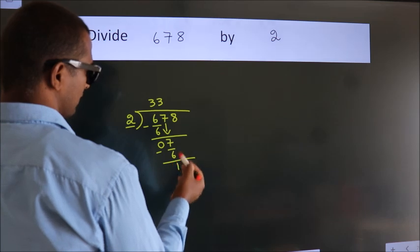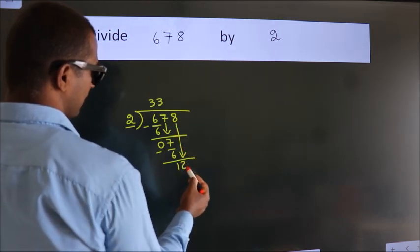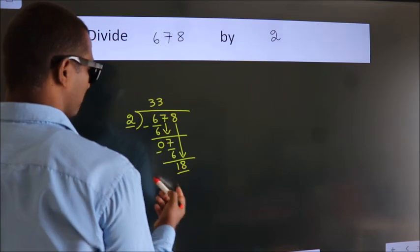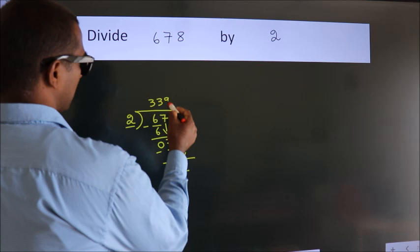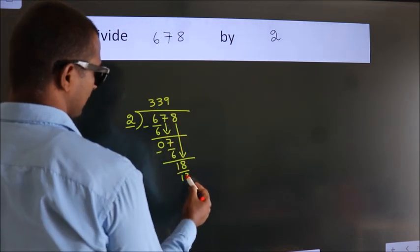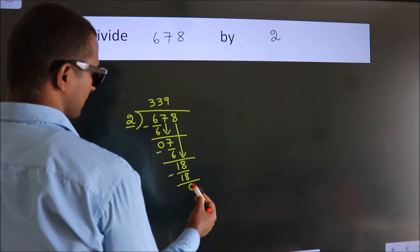After this, bring down the beside number. So 8 down. So 18. When do we get 18? In 2 table, 2 9's 18. Now we subtract. We get 0.